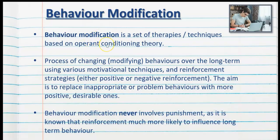Behavior modification is a set of therapies or techniques based on operant conditioning theory. It's the process of changing or modifying behaviors over the long term using various motivational techniques and reinforcement strategies, which can include either positive or negative reinforcement. The aim is to replace inappropriate or problem behaviors with more positive, desirable ones. It's important to remember that behavior modification never involves punishment, as reinforcement is much more likely to influence long-term behavior.